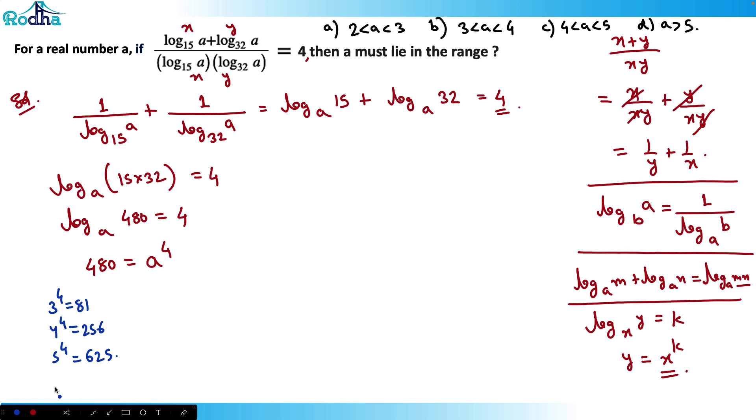So that basically means that this 480 is actually between 4^4 and 5^4. So this is actually a^4, so I can write that a is between 4 and 5. So a is less than 5 and more than 4. So option C is the answer.